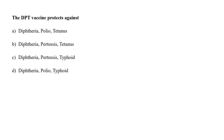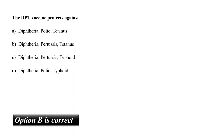The DPT vaccine protects against A. Diphtheria, Polio, Tetanus; B. Diphtheria, Pertussis and Tetanus; C. Diphtheria, Pertussis and Typhoid; or D. Diphtheria, Polio and Typhoid? In the DPT vaccine, D, P and T stands for Diphtheria, Pertussis and Tetanus. So the correct answer is option B: Diphtheria, Pertussis and Tetanus.